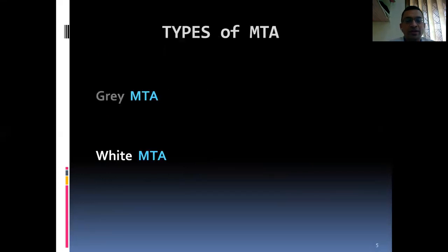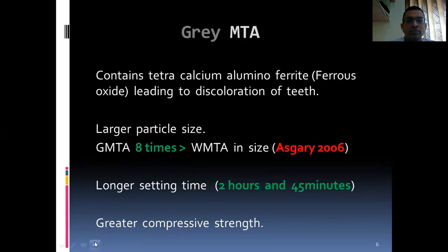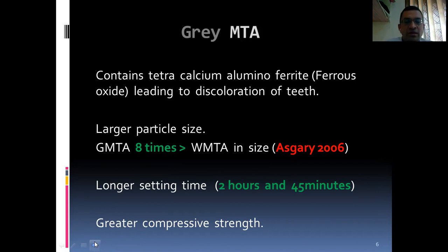Types of MTA: we have grey MTA and white MTA. Grey MTA contains tricalcium aluminoferrite, but it leads to discoloration of teeth. It has a larger particle size, which is 8 times greater than white MTA according to Asgari 2006. It has a longer setting time of 2 hours and 45 minutes.